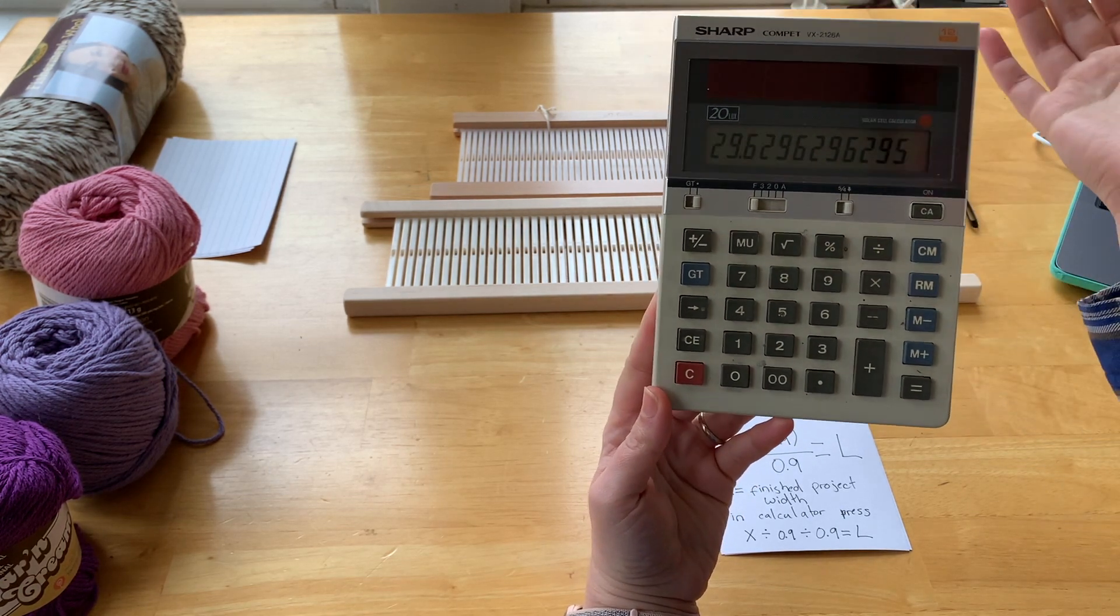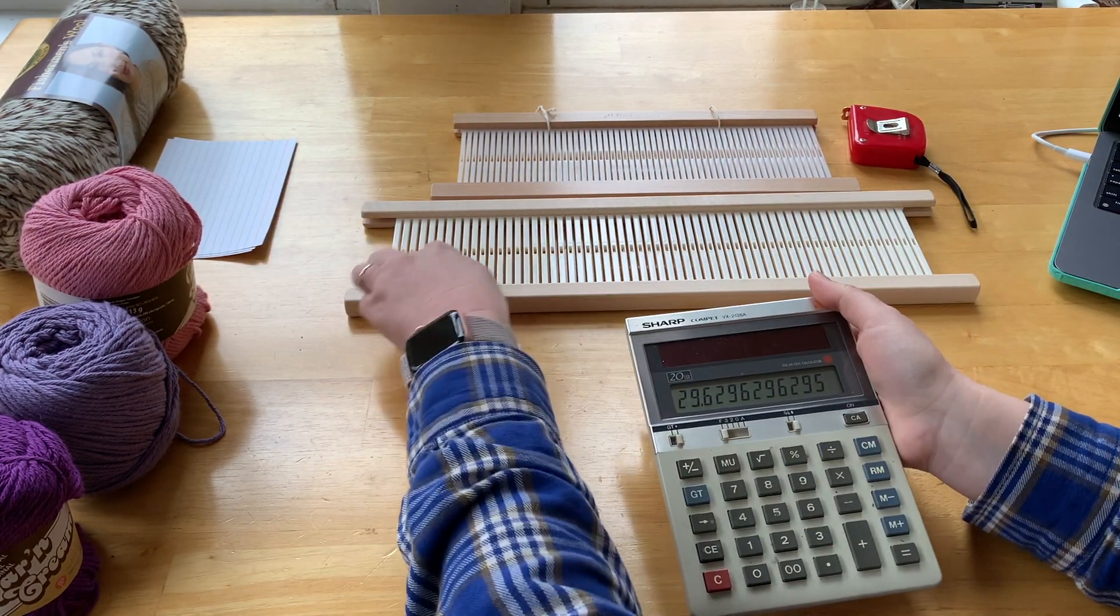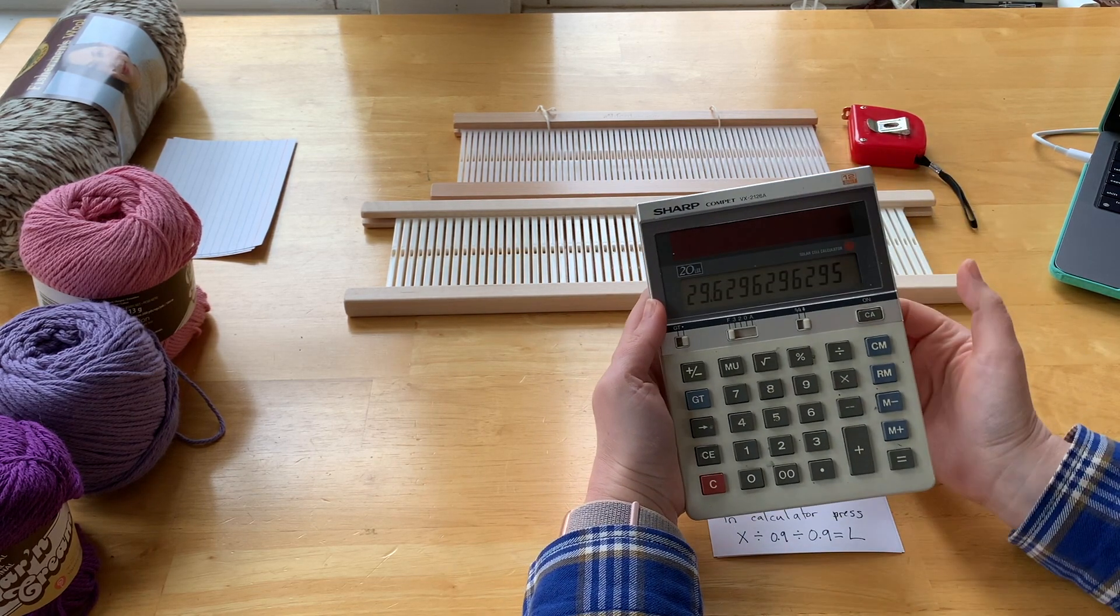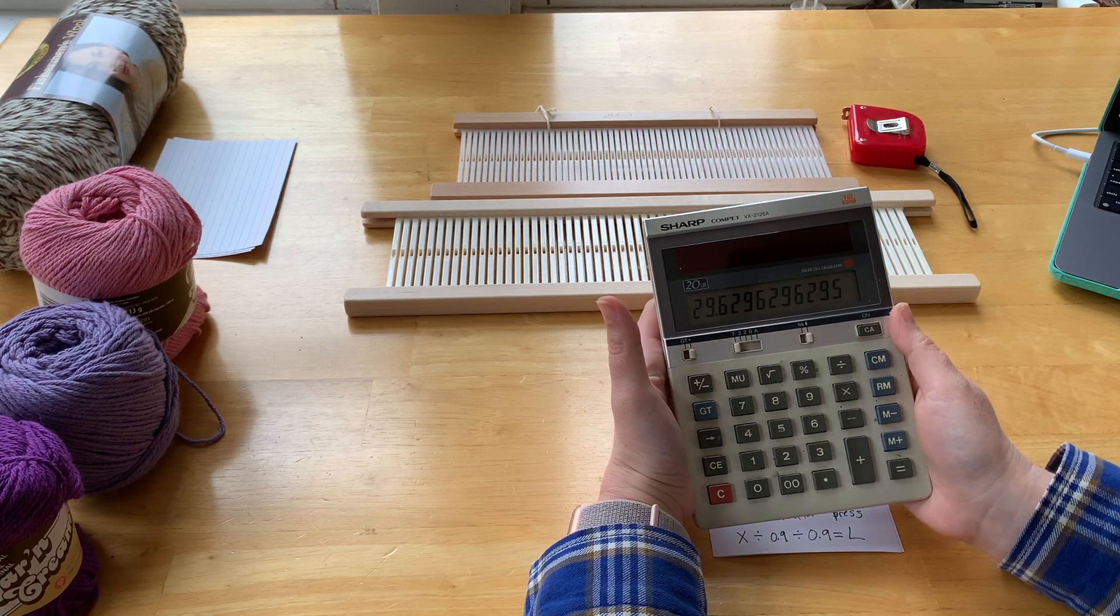Now, I could sit down and calculate exactly how many holes and slots that would be, but just to save myself some time, I'm going to just bump that up to 30 inches to make it easy on myself. So my width on loom needs to be 30 inches.